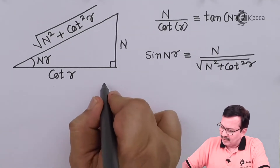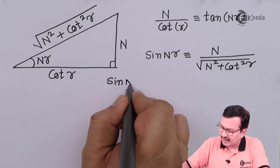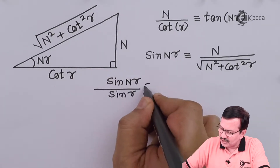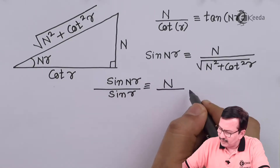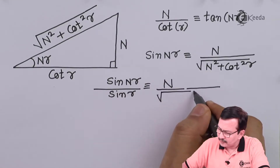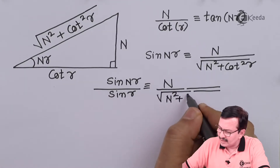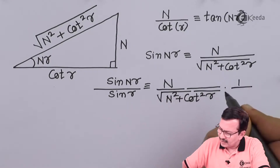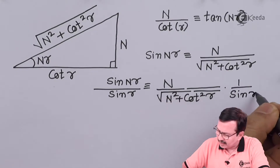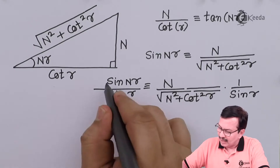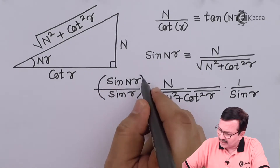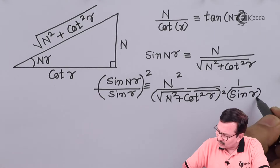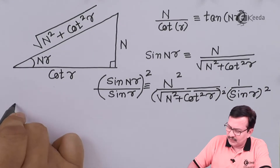After this, we try to find out what is sin(nγ)/sin(γ), which turns out to be n upon √(n² + cot²(γ)), and this is multiplied by 1/sin(γ). I now take the square of this expression — I take the square of each term here.